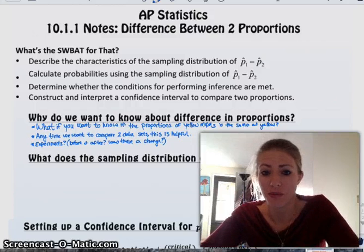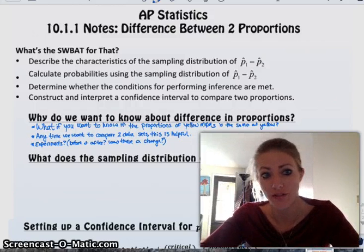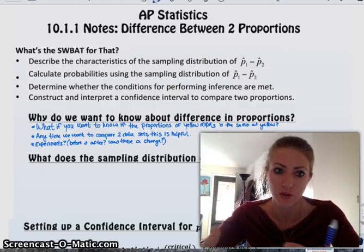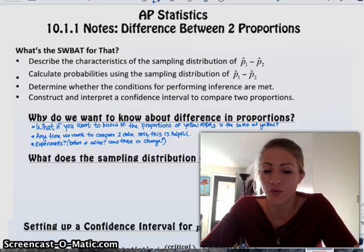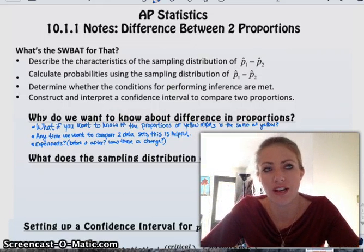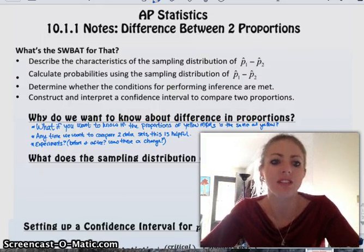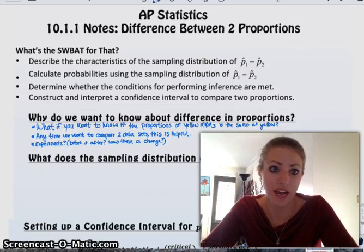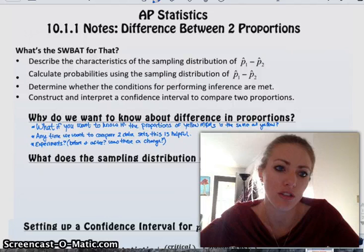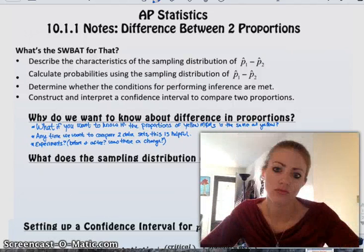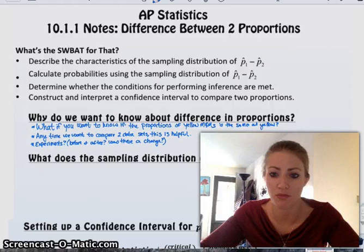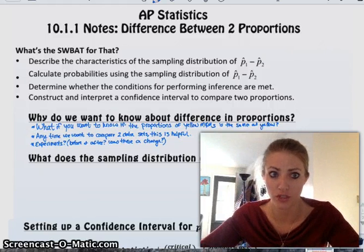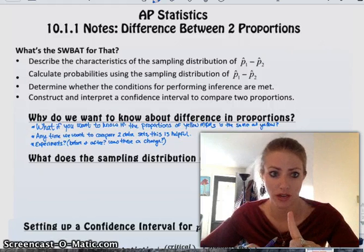Experiments are also good examples because usually you have a before and after, right? You have the before the treatment and then after the treatment and you want to compare those two results and see if the variation in the results is due just to chance or did your treatment actually do something. Also much more practical reason. So the next question is what does the sampling distribution look like if you're looking at differences instead of just one single statistic.